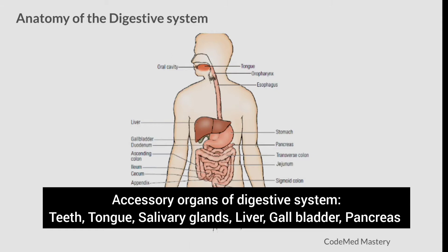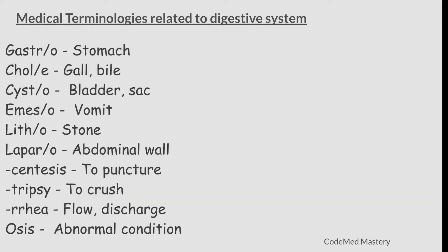Let's look at some medical terminologies related to the digestive system: gastro means stomach; chole means gall or bile; cysto is bladder or sac; emesis means vomit; litho means stone; laparo refers to abdominal wall; centesis is to puncture; tripsy means to crush; rhea means flow or discharge; and osis is abnormal condition.